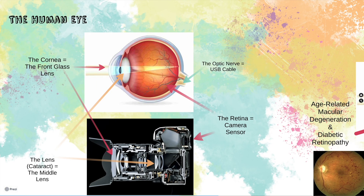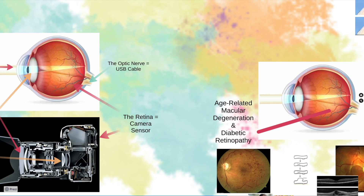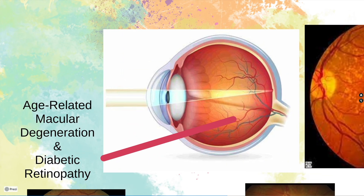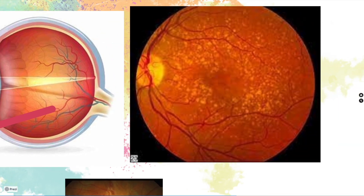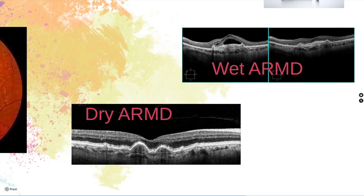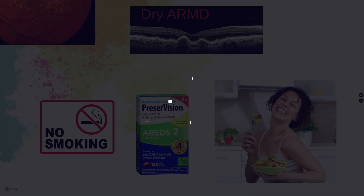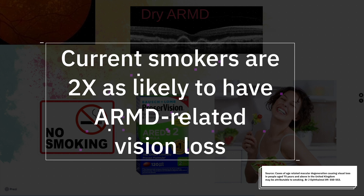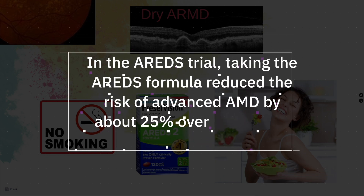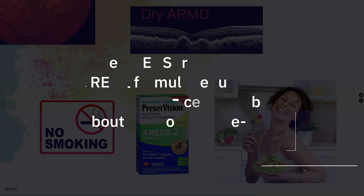Now let's talk about the retina, or the Kodak sensor of the eye. Two conditions typically affect the retina: age-related macular degeneration and diabetic retinopathy. In age-related macular degeneration, a fundus photograph shows scattered yellow spots called drusen. There are two main types: the dry type and the wet type. In dry AMD, there is no fluid forming, and the treatment is straightforward — no smoking and taking the AREDS multivitamins or eating a diet full of leafy green vegetables.